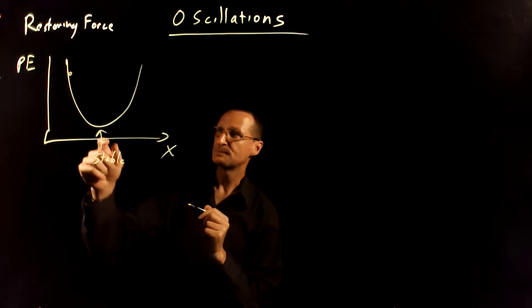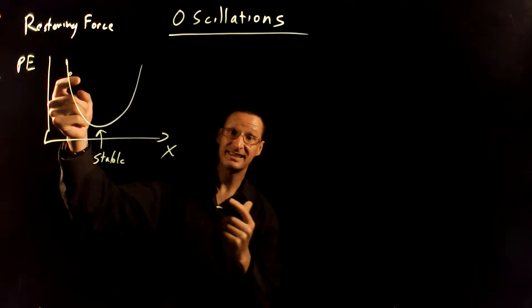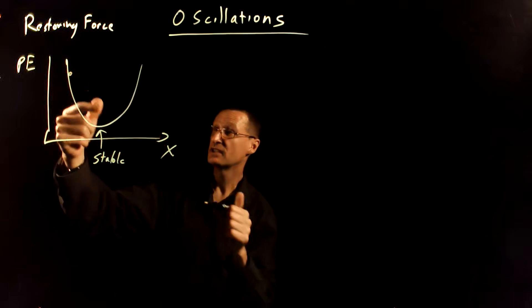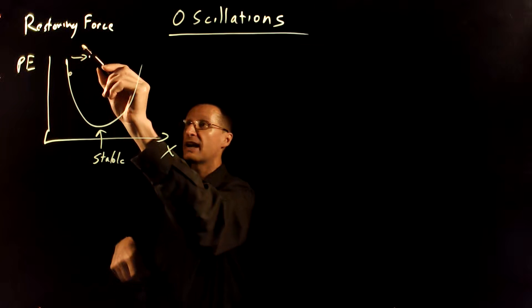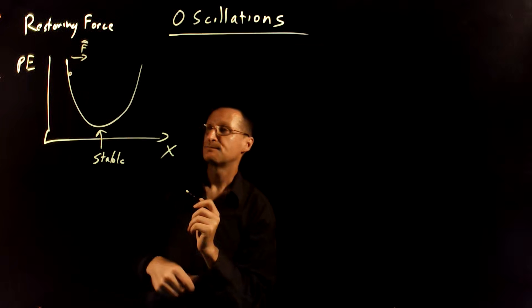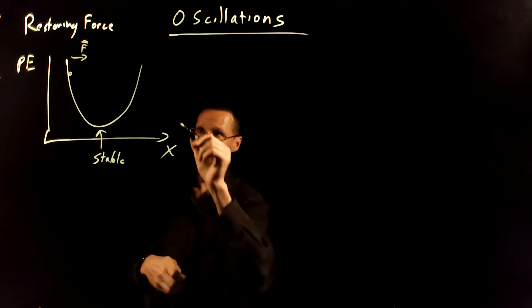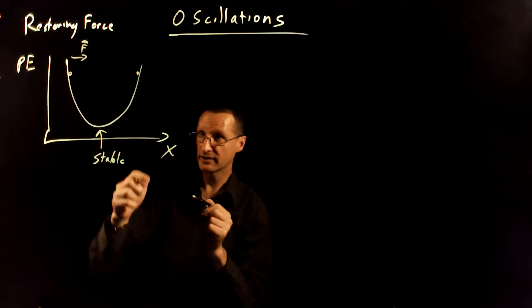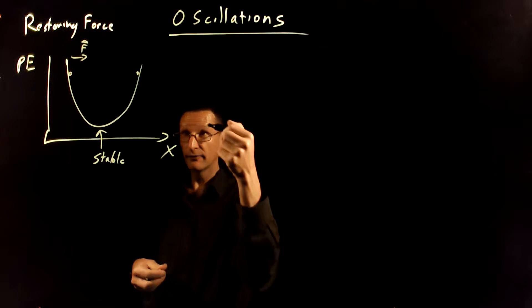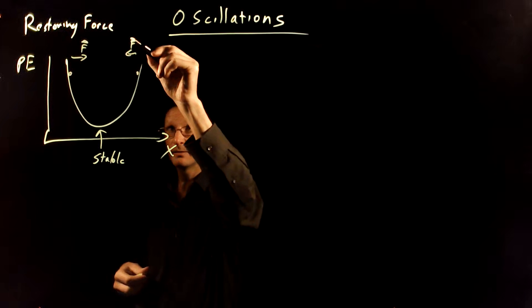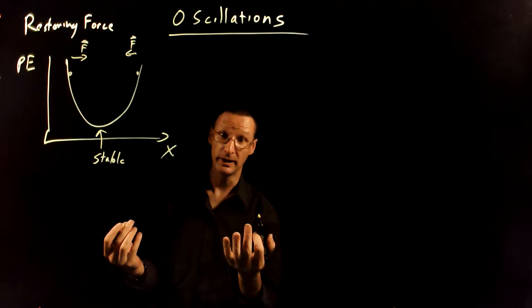So if I put the object here, remember that the force is the negative slope of the potential energy function, so it's going to feel a force back this way towards the stable equilibrium point. Likewise, if I put it here, the slope there is positive, so the force is going to be negative and point again back towards the stable equilibrium point.